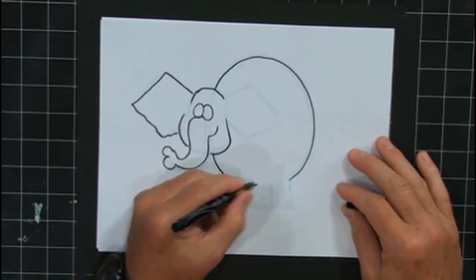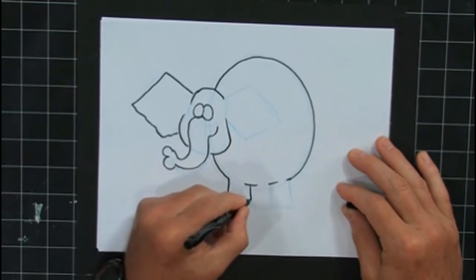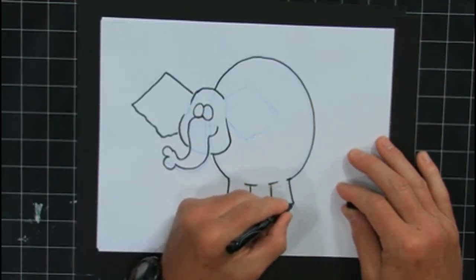So if you're ever having trouble drawing something, try to look for the simple shapes that are hidden inside of it. Once you can find those simple shapes, it'll be a lot easier to draw what you're working on.